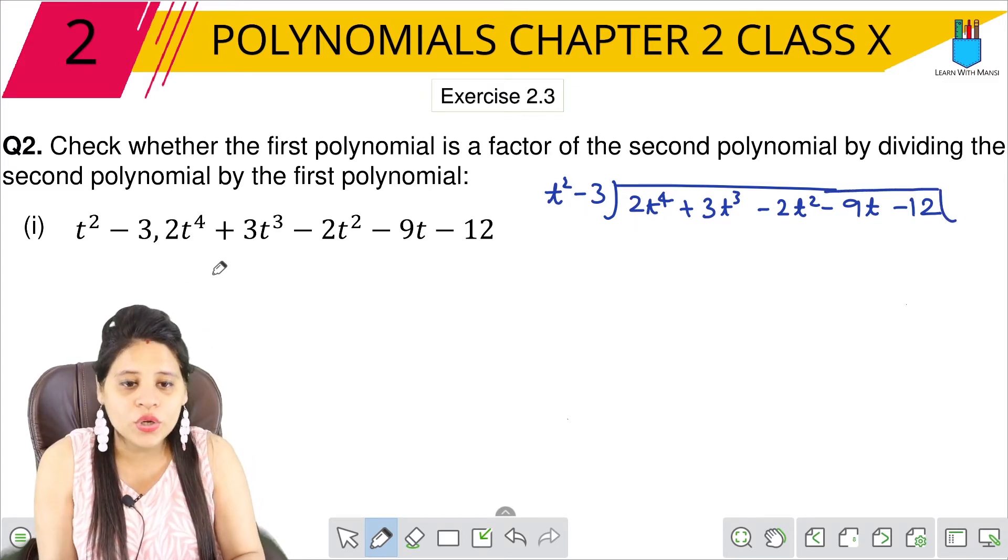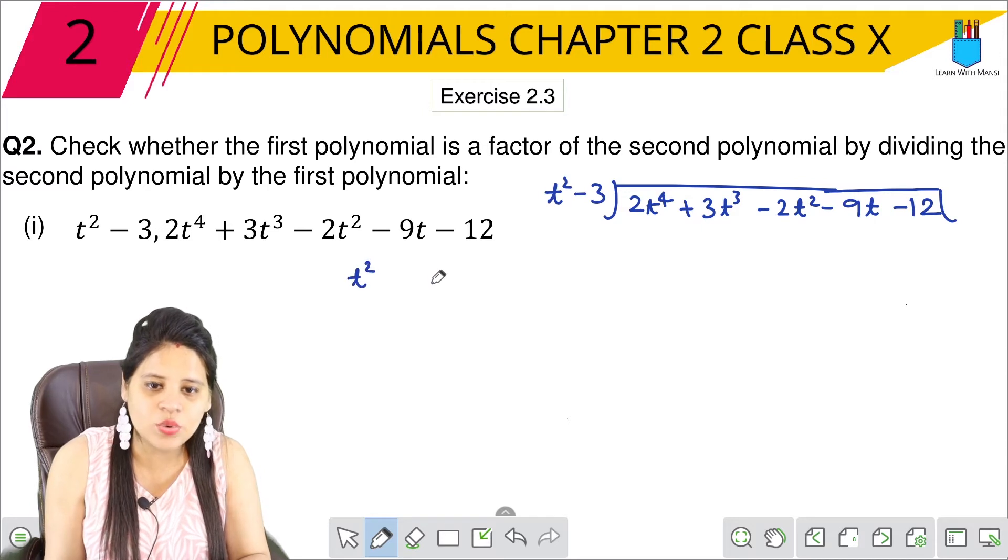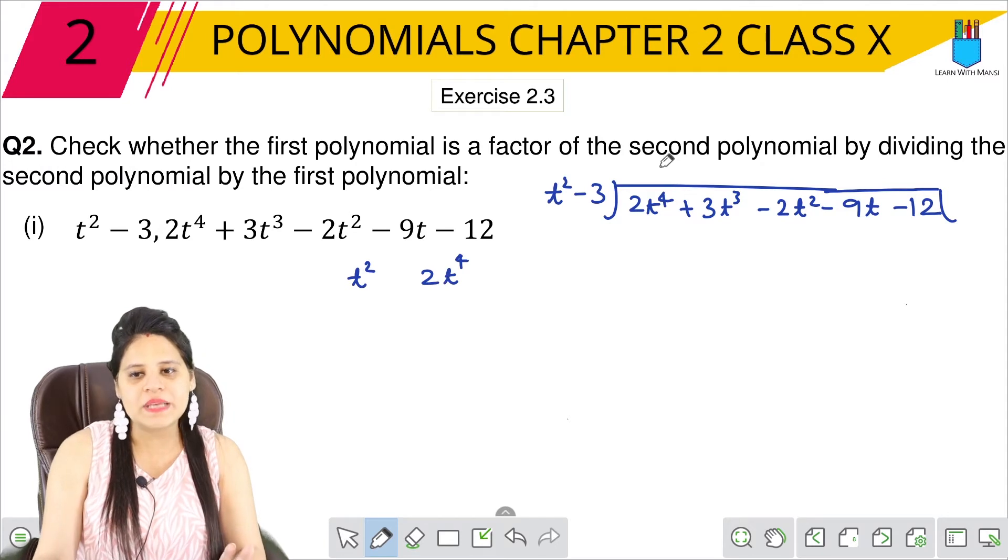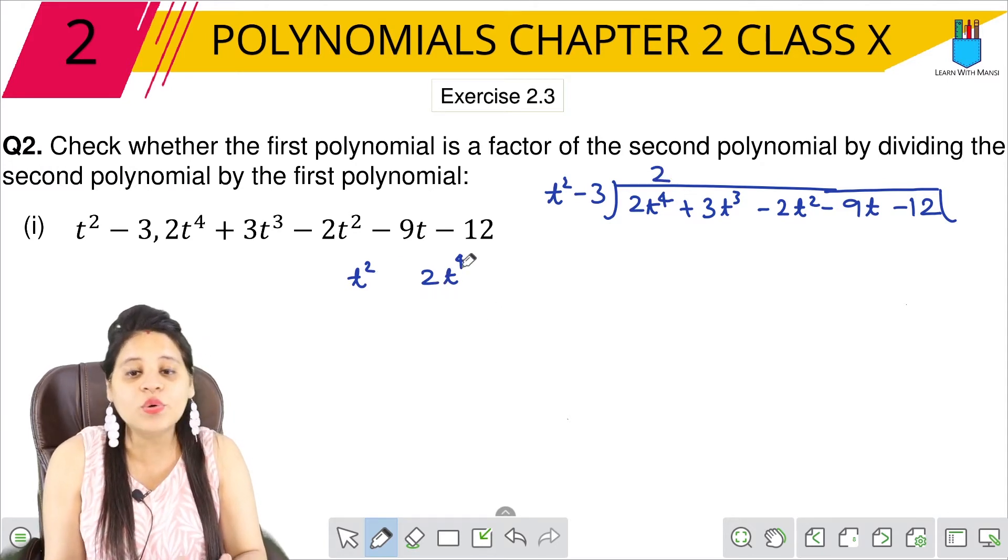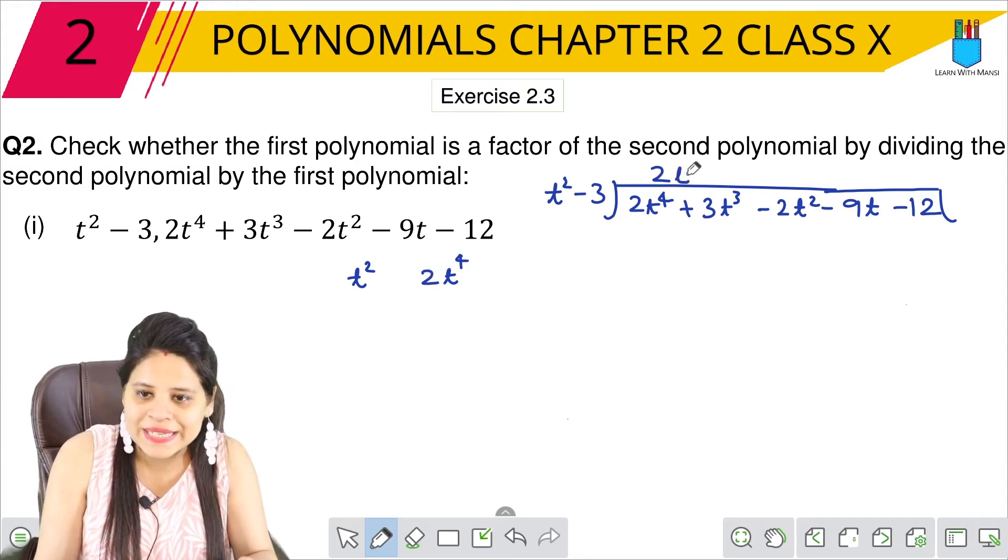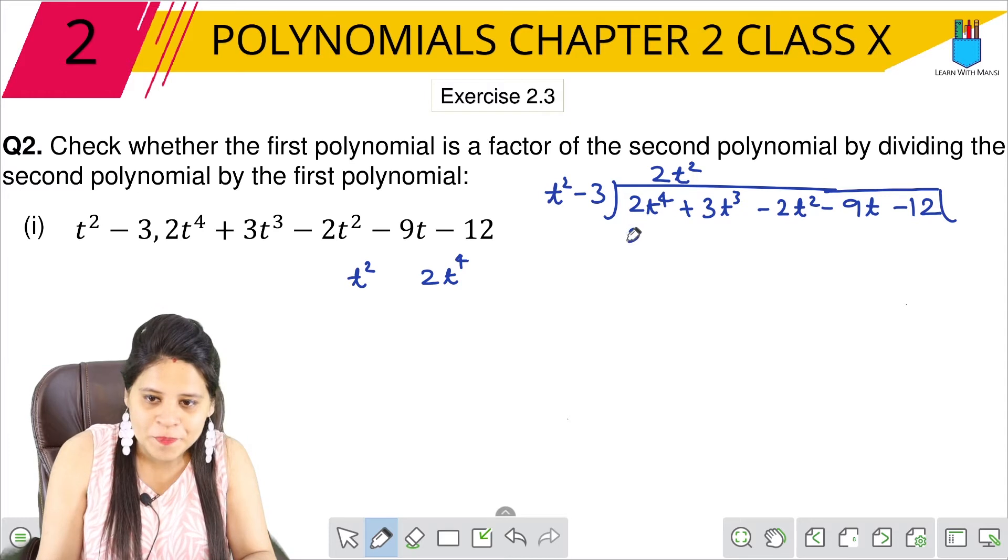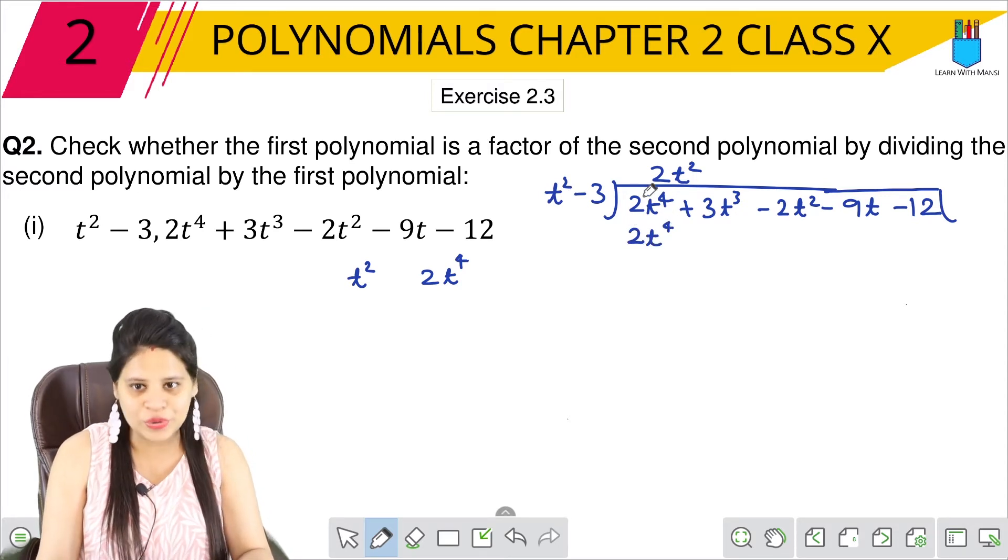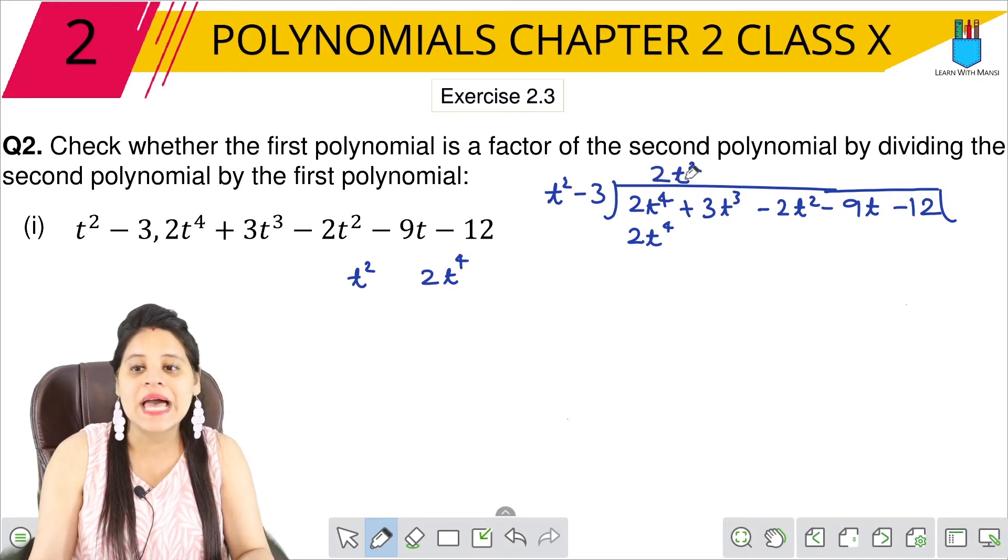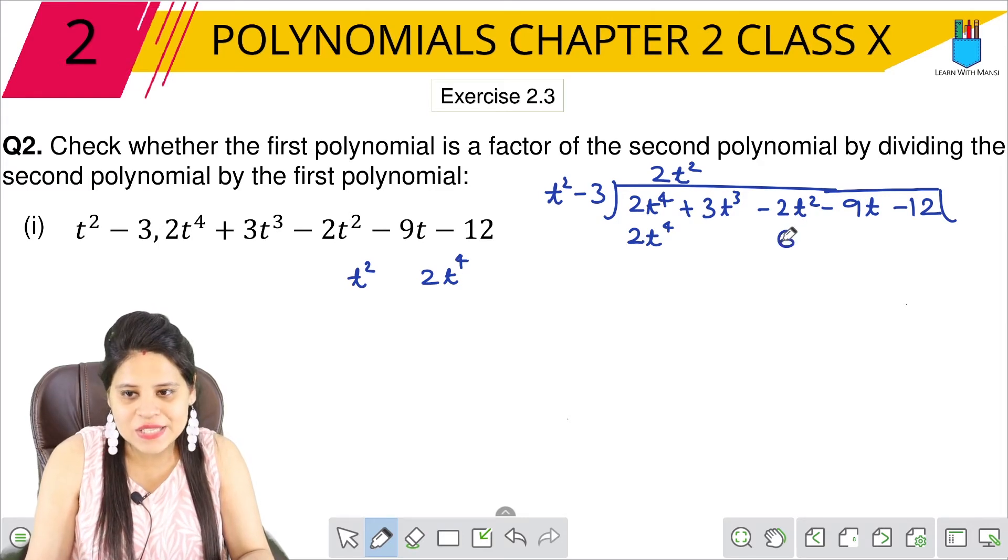First of all, t². We have to make 2t⁴. So 2t² will be multiplied. 2 into 1 is 2 and t² into t² is t⁴. Then we have to multiply -3 by 2t², so 3 times 2 is 6 and t² times t² is t⁴, so this is 6t². And then minus plus minus.